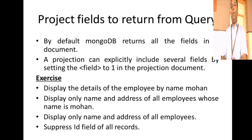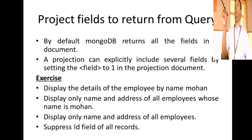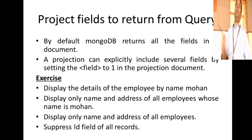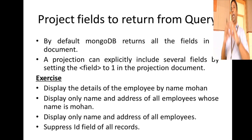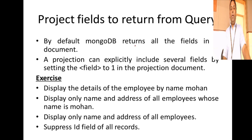We're going to look at many different MongoDB commands today. The very first thing is projection — projecting fields from a query. In relational databases we used to do this with SELECT name, address FROM employee, projecting only certain columns. Here, whenever we write a query, the entire document data is returned — name, address, phone, salary — so we want to project only certain fields from the results.